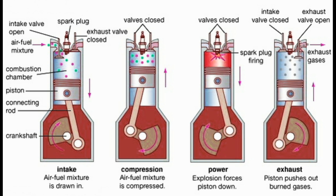Piston: it is the moving part of the engine that performs reciprocating motion and transmits the power generated during the power stroke to the crankshaft through the connecting rod. Connecting rod: it is the part of the engine which connects the piston to the crankshaft. Crankshaft: it is used to convert the reciprocating motion of the engine into rotary motion.